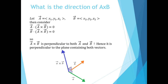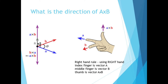Of course, this gives us two possible directions. It turns out that a cross b follows what's called the right hand rule. If you use your right hand and let your index finger represent the vector a, and your middle finger represent the vector b, then your thumb will be pointing in the direction of a cross b. That is, looking down from the side where a cross b is pointing, vector a must rotate counterclockwise to get to b.